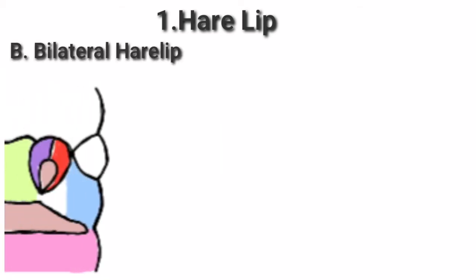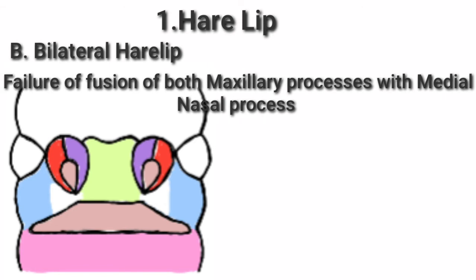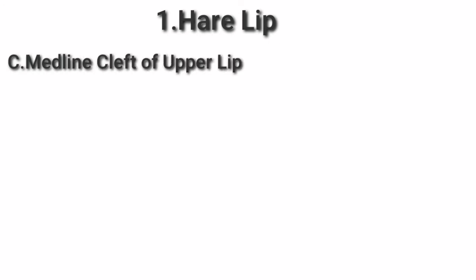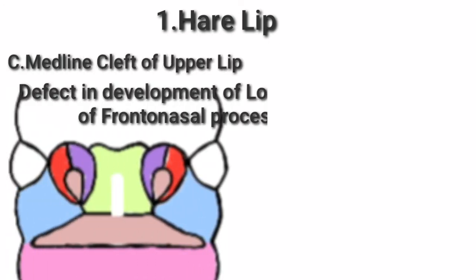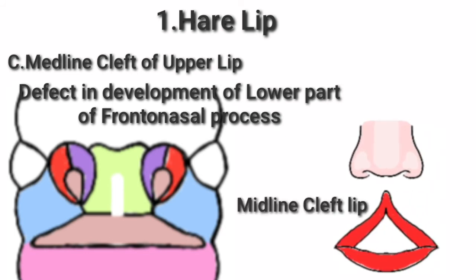Bilateral hare lip — see this diagram. When there is a failure of fusion of both maxillary processes with the medial nasal process, bilateral hare lip will occur. Midline cleft in the upper lip — see this diagram. If there is any defect in the development of the lower part of the frontonasal process, this leads to the midline cleft lip.